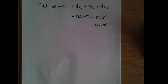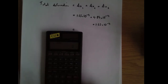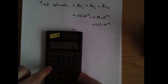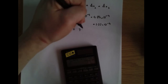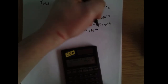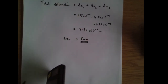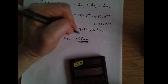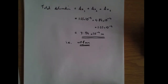Adding those up gives 7.94 times 10 to the minus 4 metres, approximately 0.8 millimetres total deformation. You could leave the answer as 7.94 times 10 to the minus 4 metres — that's a perfectly reasonable way to express it. That is how to do question 1 on this exam.